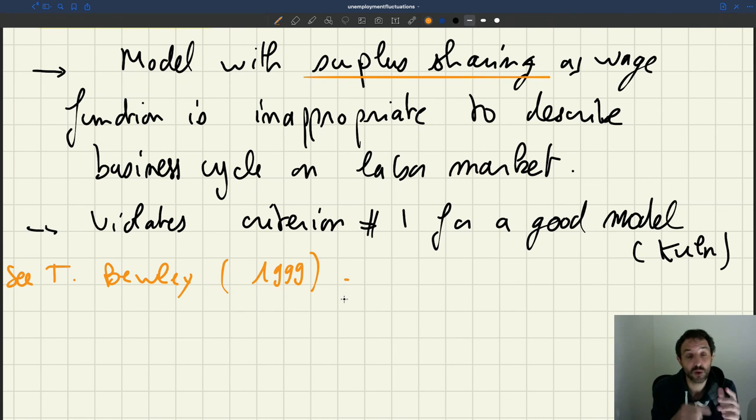So overall, the problem is not with the matching model, but it was with the assumption of surplus sharing. Once you strip that assumption away and you replace it, say, with a rigid wage like what we've done earlier, and you calibrate the amount of rigidity to try to match what you see in micro data, or in whatever data you have available, then you get a model that behaves very respectably and that gives you enough fluctuations in unemployment. So instead of throwing away the matching model, the only thing that had to be done was to throw away the surplus sharing assumption. And then once you replace it with something more appropriate, you get a model that behaves very well over the business cycle.